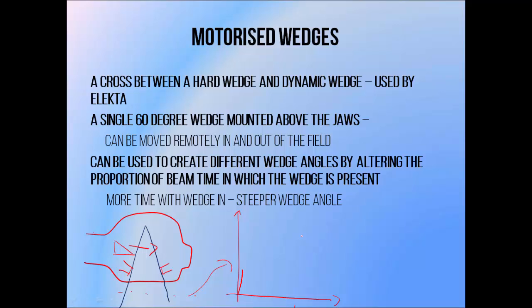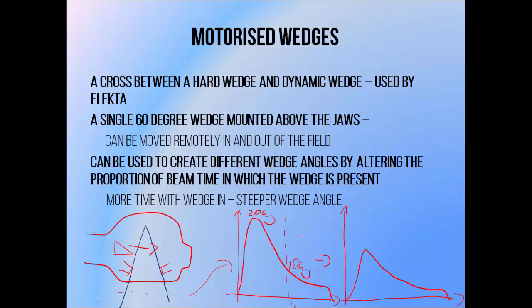Say we want to deliver 10 grey to the centre of the beam. If we want to use a 60-degree wedge angle, we deliver the entire field with the wedge in place, winding up with a much higher dose on one side — let's say 20 grey, twice as much as in the beam centre. If we want a shallower wedge angle, we can deliver part of the beam with the wedge in place and the remainder without. Delivering 5 of the 10 grey to the centre using a wedge field, then another 5 grey with the wedge out, gives 10 grey in the centre but only 15 grey on the high side instead of 20 grey. So the ratio of the highest dose to the centre dose drops from 2:1 to 3:2. We can therefore adjust the wedge angle by adjusting the ratio of beam delivered with the wedge in versus out.